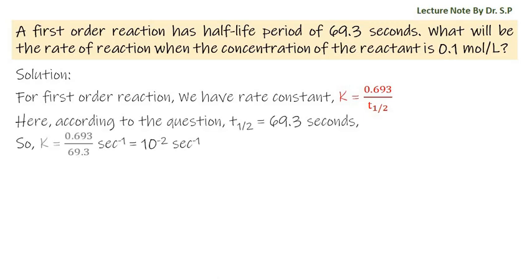Here, according to the question, T-half = 69.3 seconds. So K = 0.693/69.3 per second, that is K = 10^-2 per second.